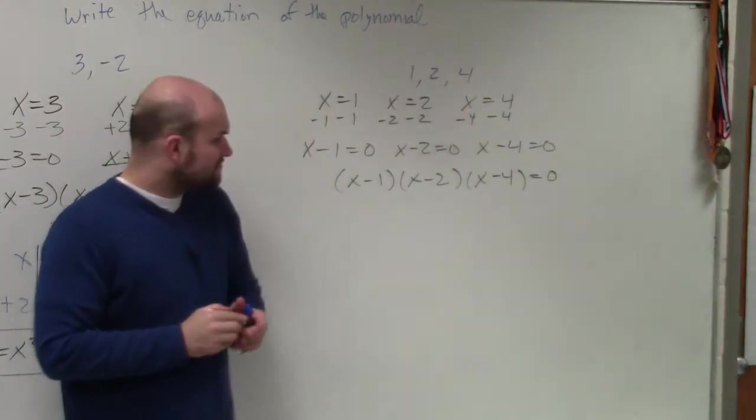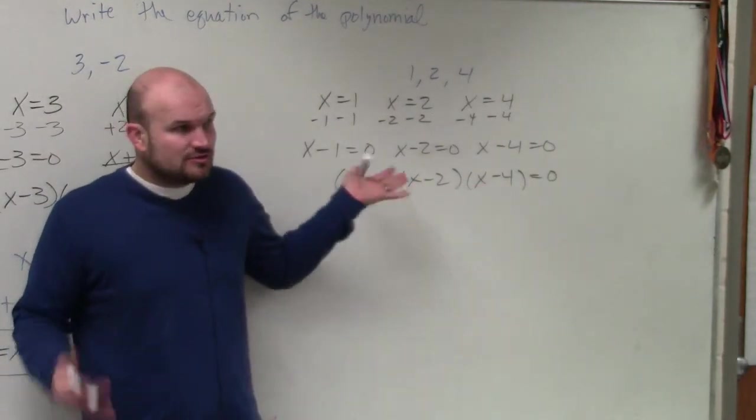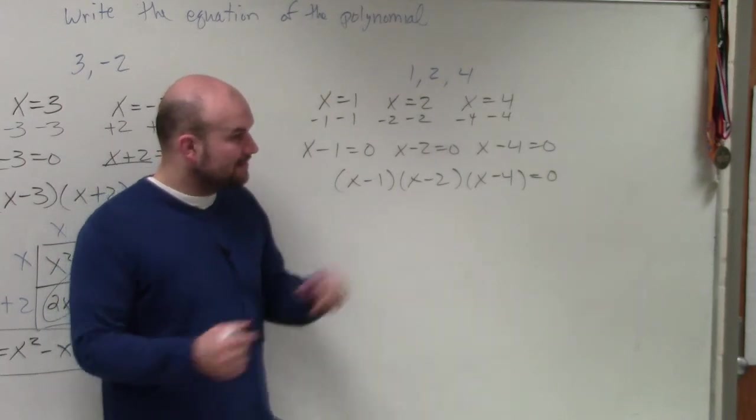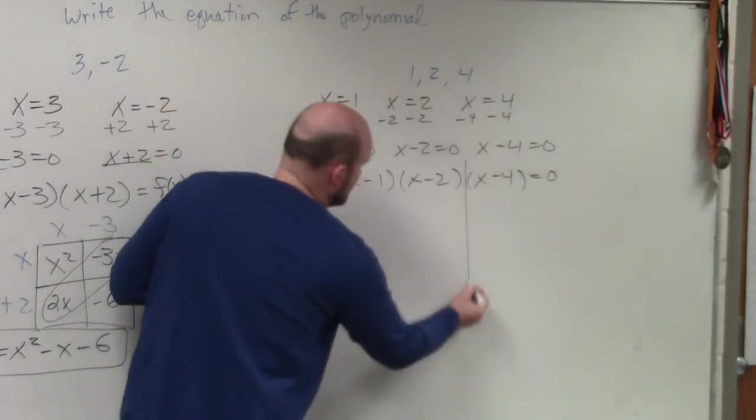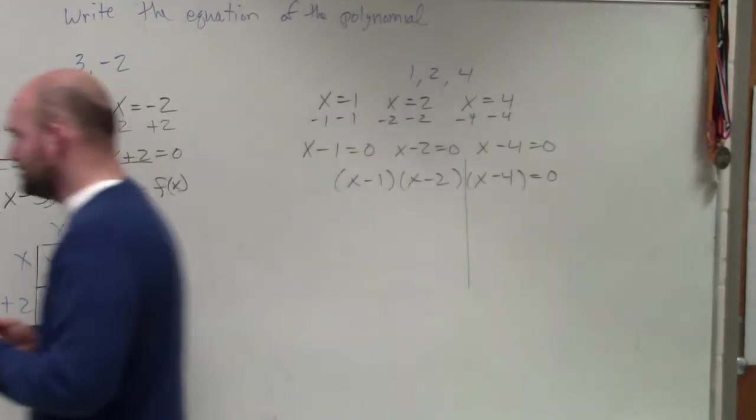So it looked like x minus 1 times x minus 2 times x minus 4 equals 0. And what I told you guys is to multiply three binomials can be very kind of intimidating, right? So don't multiply all three. Just multiply two at a time. So I told you guys just to multiply these two first.